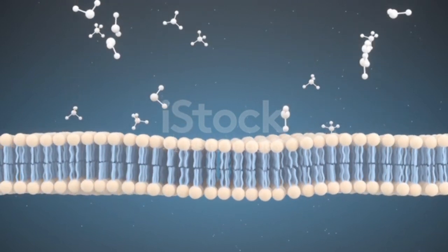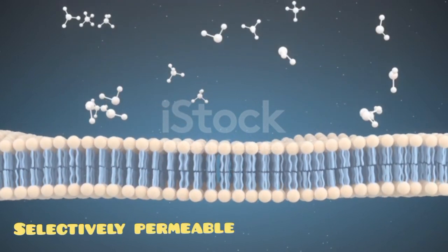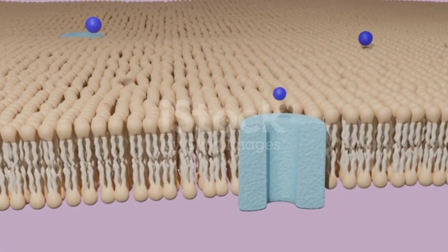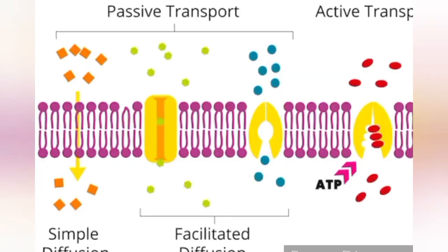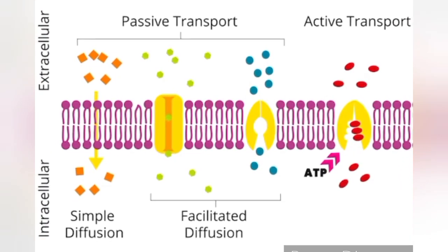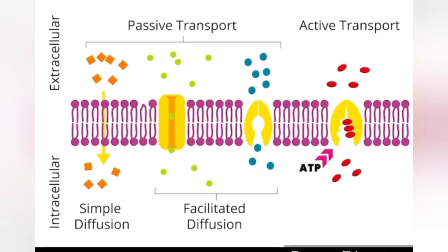Selective permeability: The plasma membrane is selectively permeable, meaning it allows specific molecules to pass through via processes such as diffusion, osmosis, facilitated diffusion, and active transport.